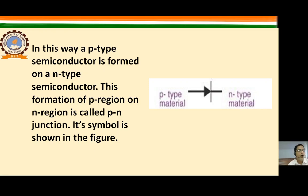The formation of a p-region on an n-region is called a p-n junction, and its symbol is shown in the figure. In the figure, the left side is p-type material and the n-type material is on the right side.